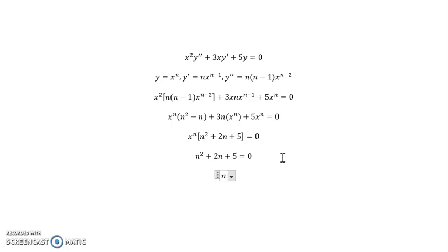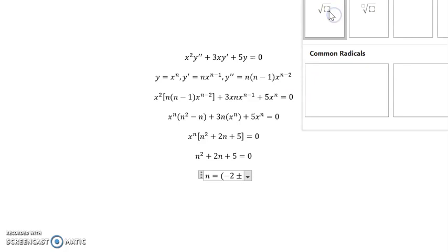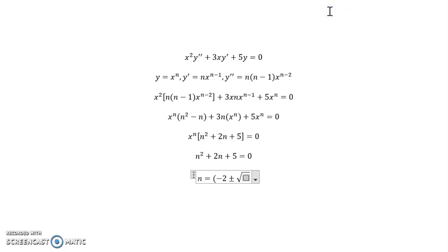And so we have n equals, well, negative b is going to be negative 2 plus or minus the square root of, b squared is 4, minus 4 times a, which is 1, times c, which is 5, all divided by, make sure this is outside our square root, all divided by 2 times a, which is 1.